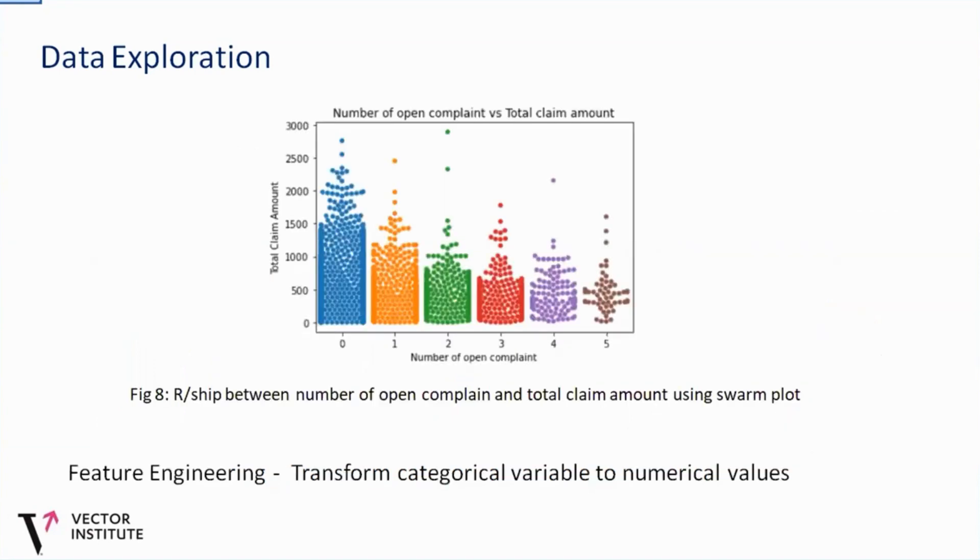So we also visualized using the swamp plots where we could see that those that complained more, you know, have paid lower total claim amount compared to those that complain less.